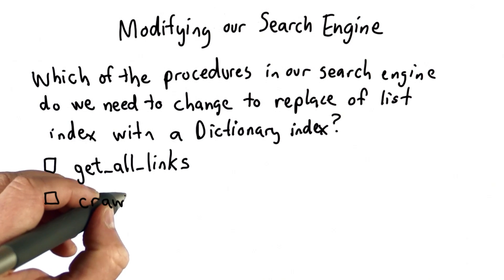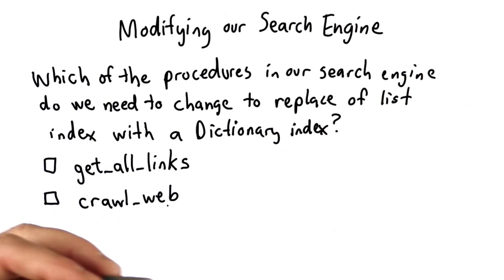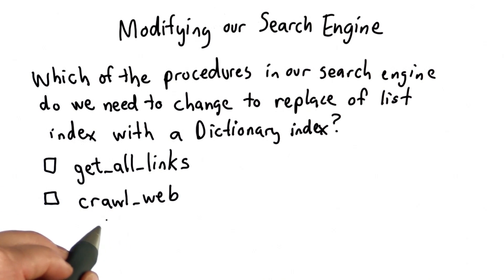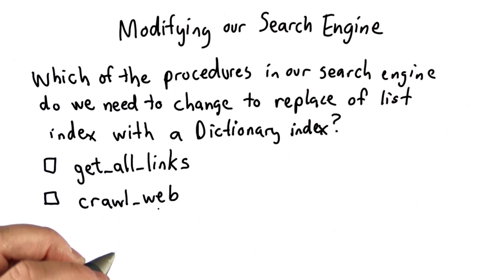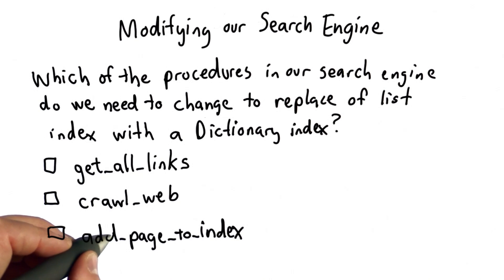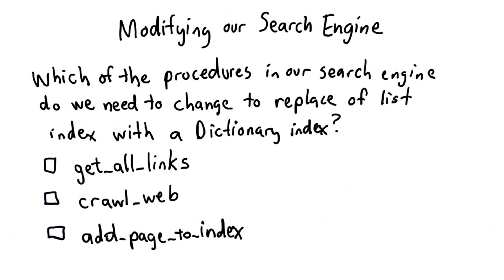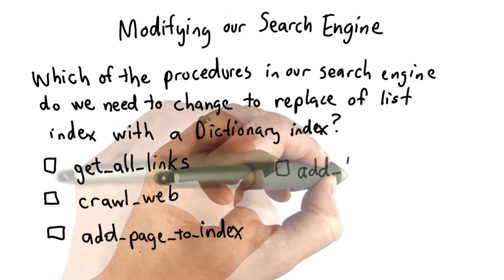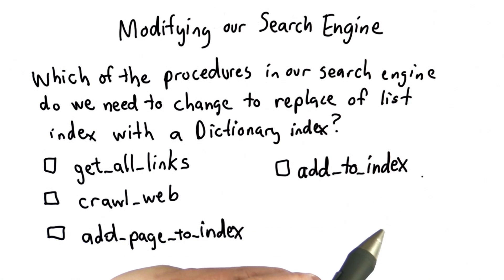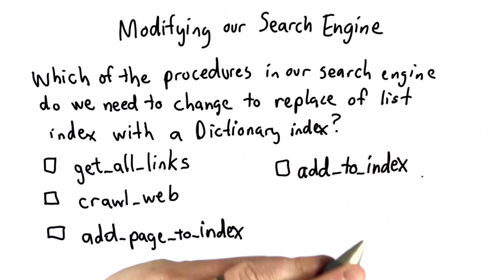We had the procedure `crawl_web`, which started with a seed page and then followed all the links found in that page, collecting pages, and for each page collecting the keywords and adding them to the search index. We had `add_page_to_index`, called by `crawl_web` when a new page was found, which would add that page to the index by finding all the words on that page and adding them to the index. We had `add_to_index`, which would take the index, a keyword, and the URL where it was found, and add that location to the index.